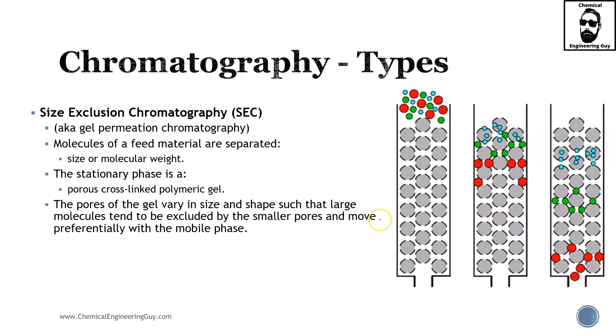And finally, we got to the size exclusion chromatography, which for me is a very straightforward approach—it's almost like a filter or a sieving system. It is also known as gel permeation chromatography.